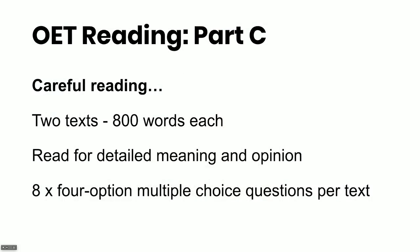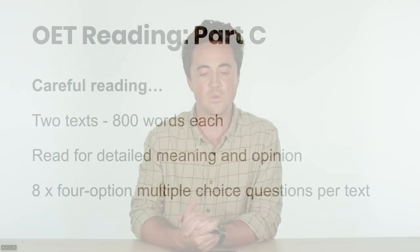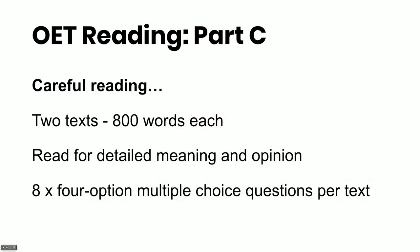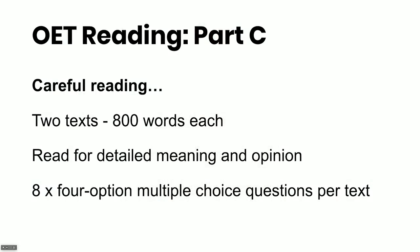So as I mentioned, it's about careful reading. And what you'll get on test day is in fact two texts — each of those texts will be 800 words each, or thereabouts. You'll need to read for detailed meaning, and also — which is very different to Reading Part A or B — reading for opinion and attitude as well. So you'll get eight four-option multiple choice questions per text. Let's do a little bit of practice here.